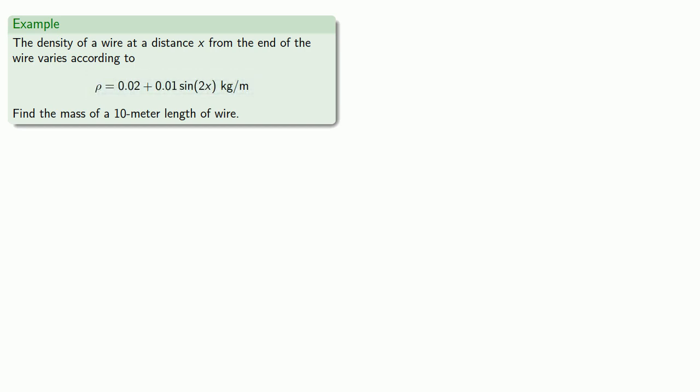So our units are helpful for figuring out what we need to find. The units of mass are going to be kilograms, and we note that our density is measured in kilograms per meter. So if we multiply this density by something measured in meters, we get an amount in kilograms.